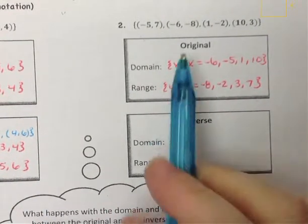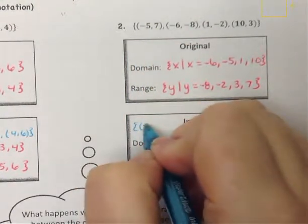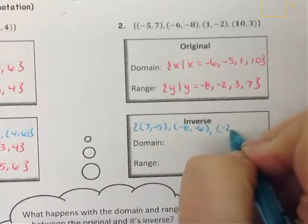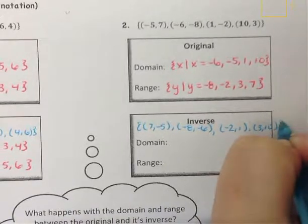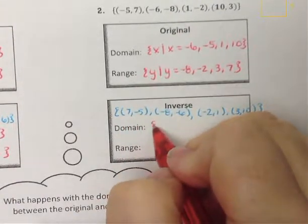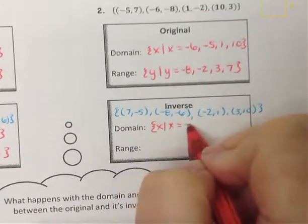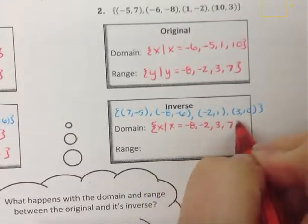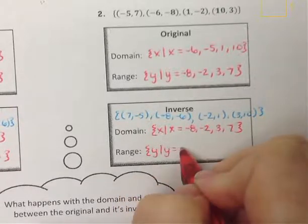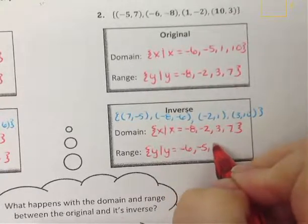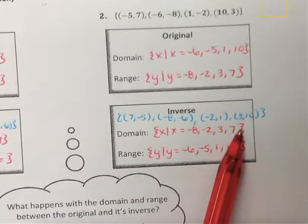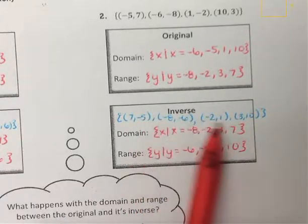For the inverse, I need to write out the coordinates — and again, the coordinates will flip. So the first coordinate will be (7, negative 5), then (negative 8, negative 6), then (negative 2, 1), then (3, 10). Those are all the coordinates of the inverse. So the domain, x such that x is equal to — the smallest x value is negative 8, then negative 2, then 3, then 7. For the range, y such that y is equal to — the smallest y value is negative 6, then negative 5, then 1, then 10. We have 4 coordinates and 4 values in our domain, so this inverse is going to be a function because we have no repeating x values.